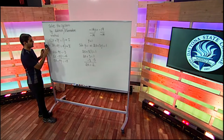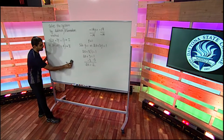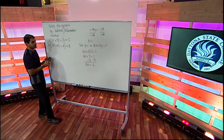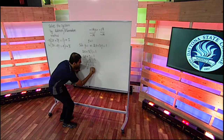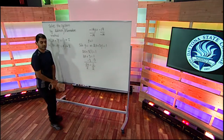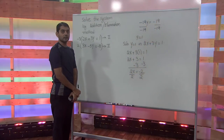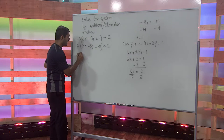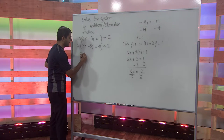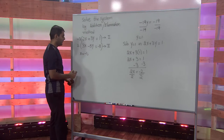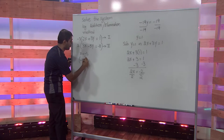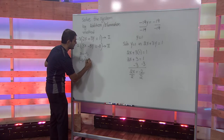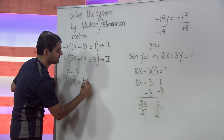To isolate the variable x on the left-hand side, we divide both sides of the equation by 2. Dividing both sides by 2, we get x equals negative 1. Hence, the ordered pair negative 1 and 1 is the solution to the system.